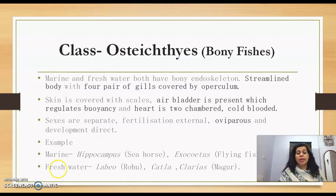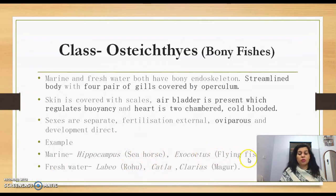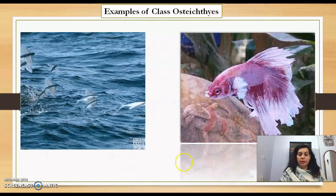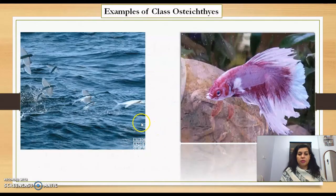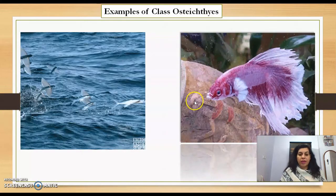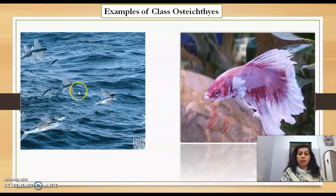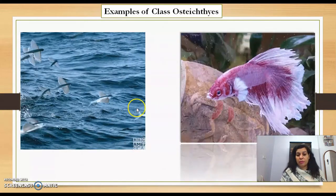Examples of Osteichthyes include marine forms such as Hippocampus (seahorse) and Exocoetus (flying fish). Freshwater examples include Labeo (rohu), Catla, and Clarias (magur). You can see these figures — the fighting fish and the flying fish are illustrated.